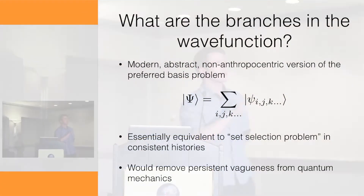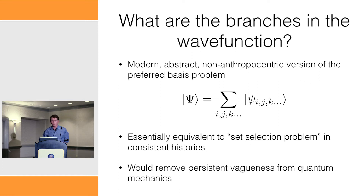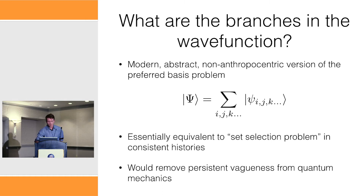You can think about it as some sort of orthogonal decomposition of the wave function such that you can't tell the difference between that and an incoherent mixture with any feasible measurement, or as whatever the things that every interpretation is supposed to produce. This is the modern, abstract, non-anthropocentric version of the preferred basis problem, and it's equivalent to the set selection problem in consistent histories.